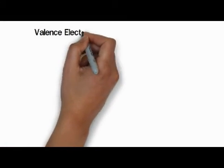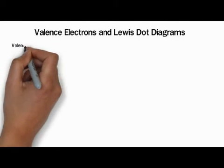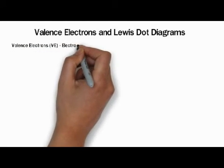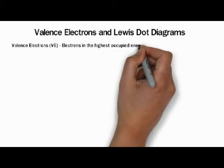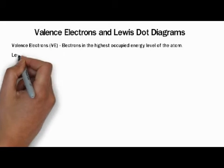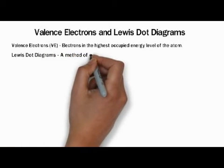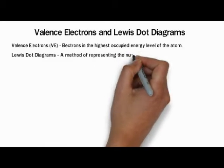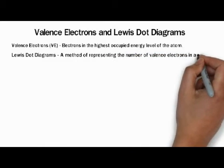We're going to talk about valence electrons and Lewis dot diagrams here in this video. A valence electron, which we're going to abbreviate VE, are electrons in the highest occupied energy level of the atom. The Lewis dot diagram is a method for representing the number of valence electrons in an individual atom.